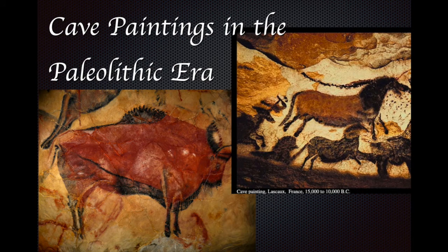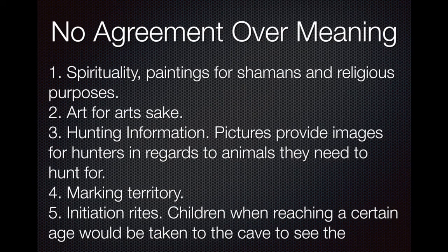An interesting fact about the Paleolithic era is we see the earliest forms of human art during this time, painted inside caves. These paintings remain a huge mystery. Theories range from spiritual or religious purposes, to hunting information — showing young hunters what a mammoth looks like and what animals to pursue. There are altogether five theories; you can look them up or copy and paste them from the slide.